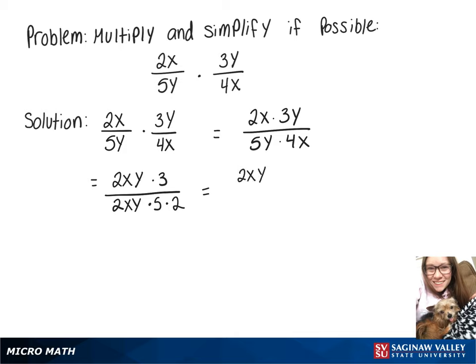Separating those fractions, we would have 2xy over 2xy times 3 over 5 times 2, which is 10. Our 2xy over 2xy cancels out and then we're left with 3 over 10.